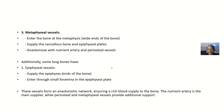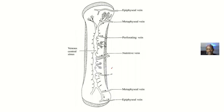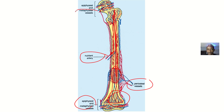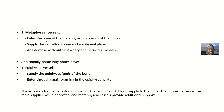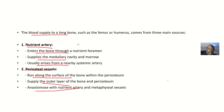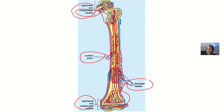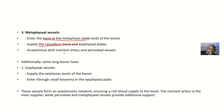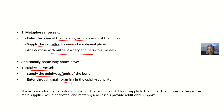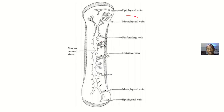Lastly, we have the metaphyseal vessels. These enter the bone at the metaphysis — that's the wide end of the bone — and they supply the cancellous bone and the epiphyseal plates. They also anastomose with the nutrient arteries and the periosteal vessels. Additionally, some long bones may have epiphyseal vessels — not all. These supply the epiphysis at the end of the bones and enter through small foramina in the epiphyseal region.